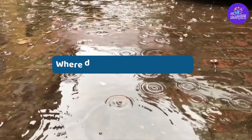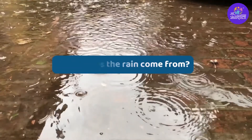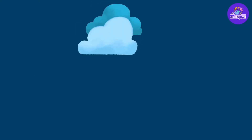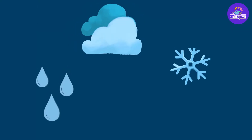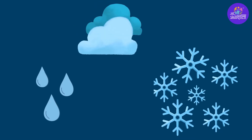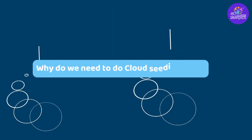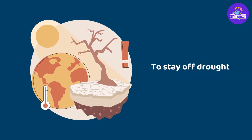Where does the rain come from? From clouds. Then what are clouds? Clouds are made up of water drops or ice crystals floating in the sky. Why do we need to do cloud seeding then? It is usually done to stave off drought.